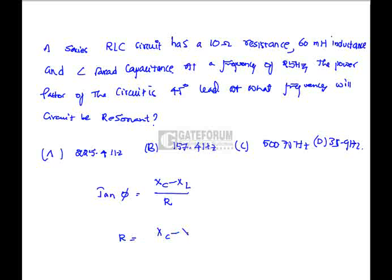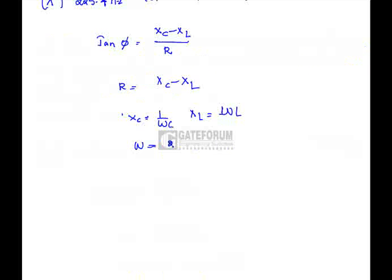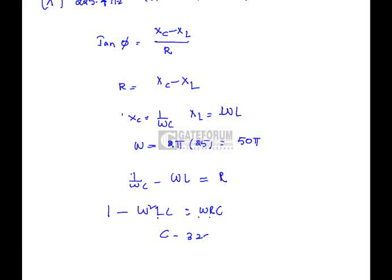So tan 45 is 1, so R equals XC minus XL. Here XC is 1 by omega C, XL is omega L. Here omega is 2 pi, F is 25, that is 50 pi. So if we solve, 1 by omega C minus omega L equals R, omega square LC, 1 minus omega RC. Here L known, R known, omega known, we need to derive capacitance. We will get capacitance value as 328 microfarad.